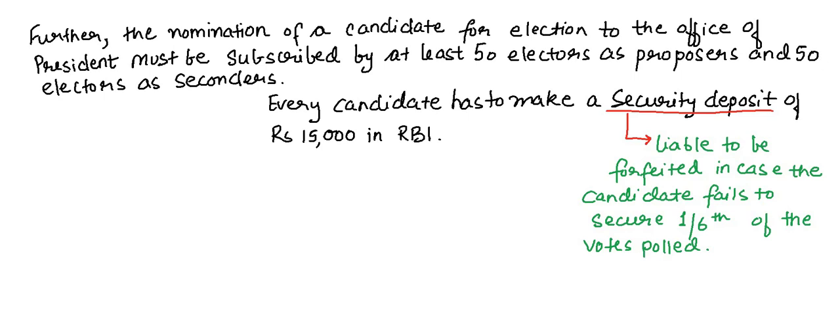The nomination of a candidate for election to the office of President must be subscribed by at least 50 electors as proposers and 50 electors as seconders — those people who will second the particular proposal. So 50 people should put forward the proposal and 50 should be their supporters.